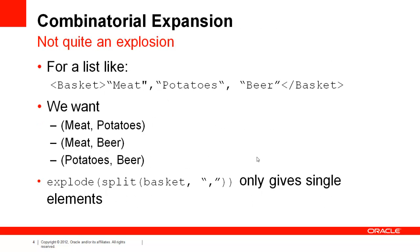I'd like to return to the central point of a combinatorial expansion. For any given shopping basket, we would like to create rules for every possible grouping of items. For a basket of meat, potatoes, and beer, we want combinations of meat implies potatoes, meat implies beer, potatoes implies beer, not to mention meat and potatoes implies beer. In this sense, a simple exploding of an array does not yield what we want.